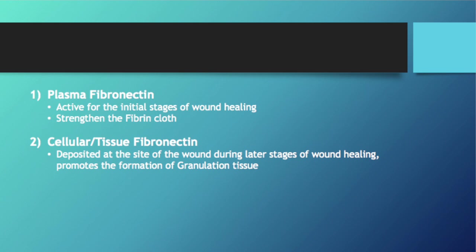There are two types of Fibronectin: one being plasma Fibronectin and the other being cellular or tissue Fibronectin. Each play a distinct role in the process of wound healing. To gain a better insight as to how each Fibronectin works, let's take a look at this animation.